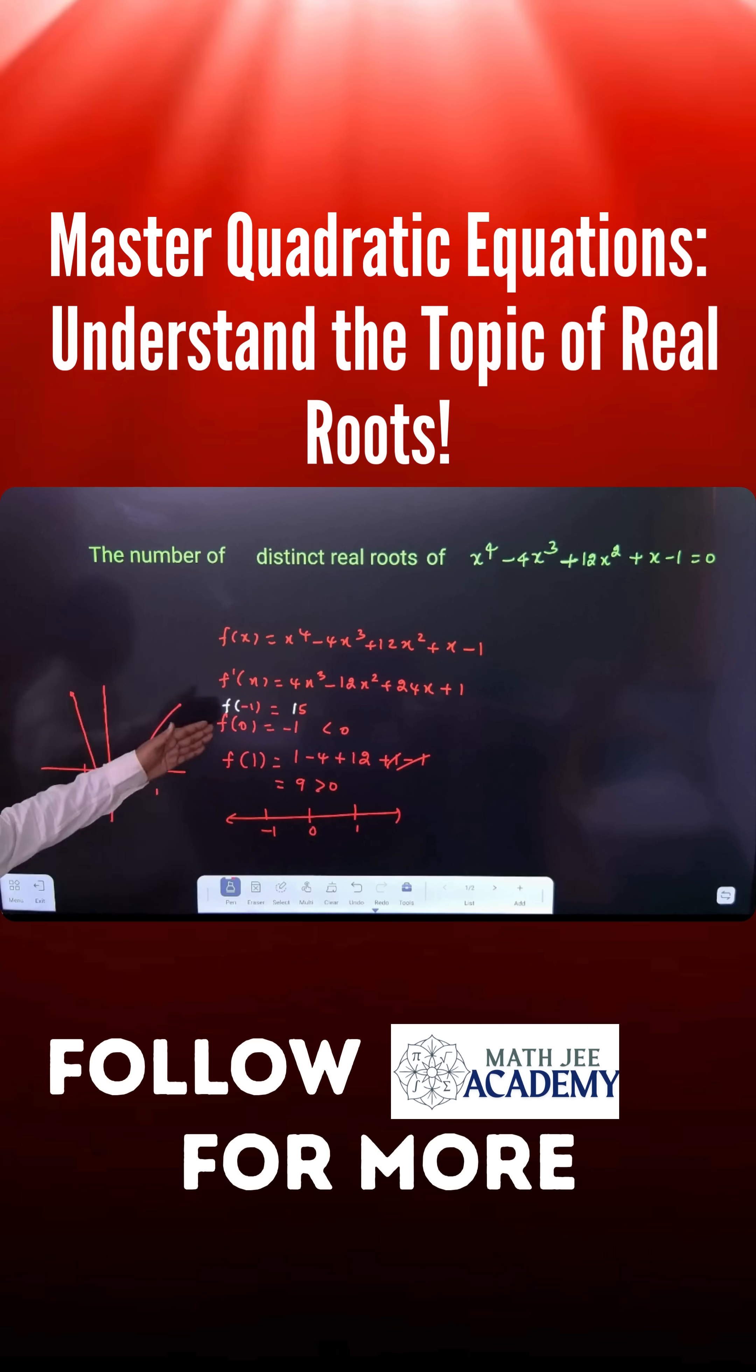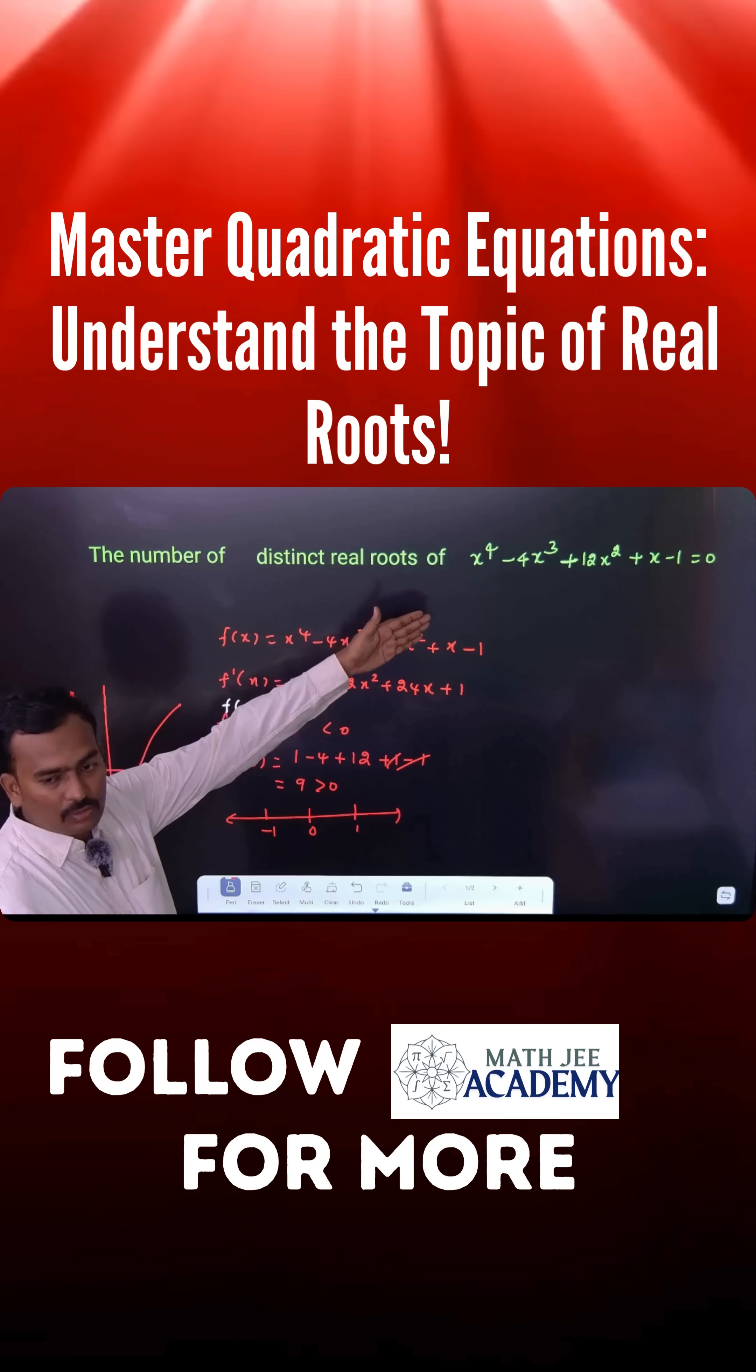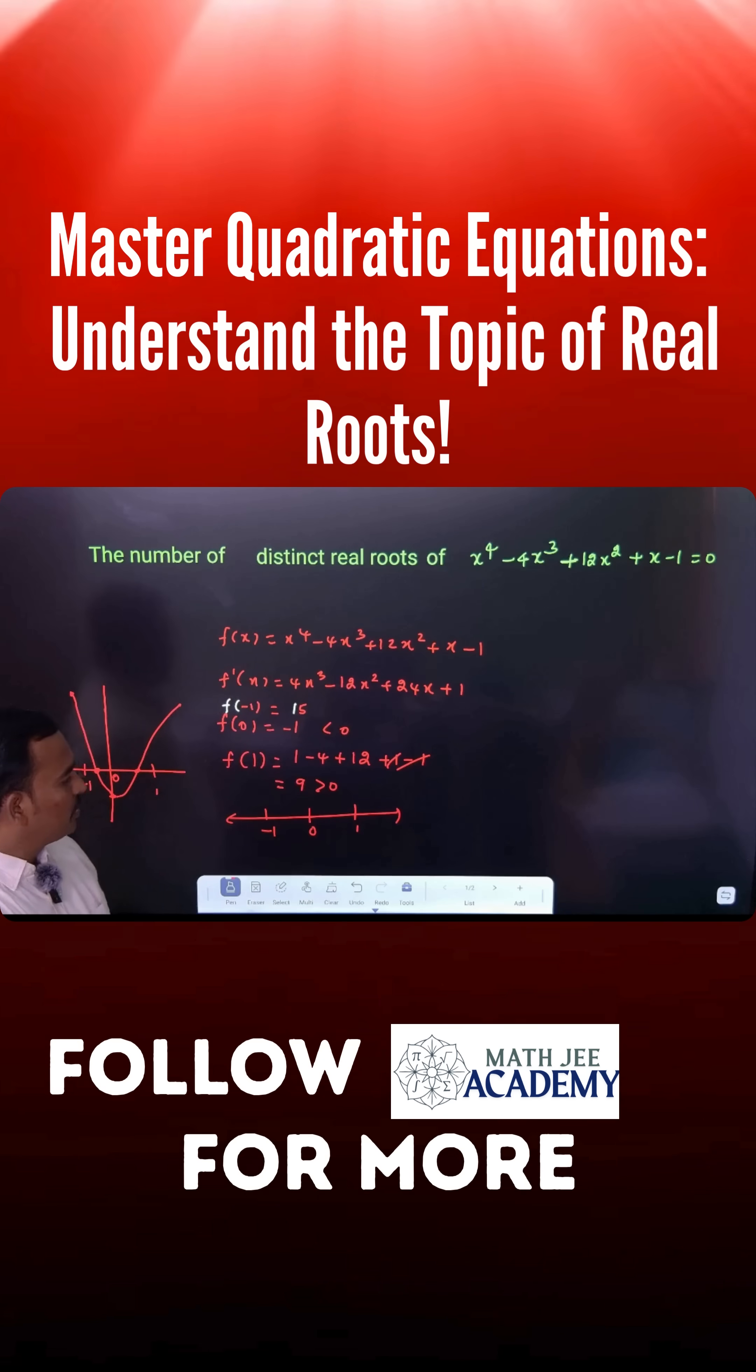But if you take after 2, 3, 4, everything is greater than 0, it's an increasing function. There is no sign change. Therefore, the intermediate value theorem says if there is a sign change, then I can find at least one real root between the interval.